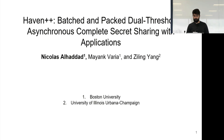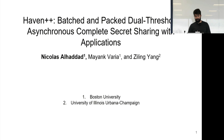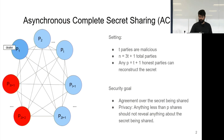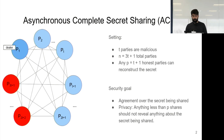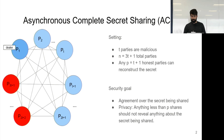Hi, I'm Nicholas Alhadad, a PhD student at Boston University, and I will be talking about Haven++, a batched and packed dual threshold asynchronous complete secret sharing. What is asynchronous complete secret sharing, or ACSS? It's a protocol that allows a dealer to distribute shares of some secret to N parties. The parties need to agree that the shares are consistent with the same secret, such that any T+1 parties can reconstruct the secret.